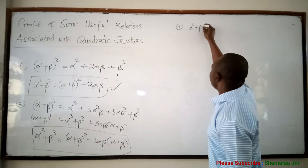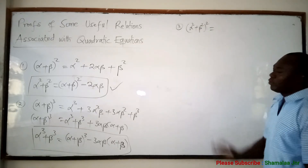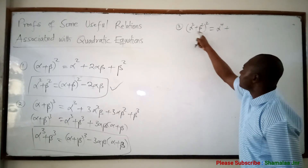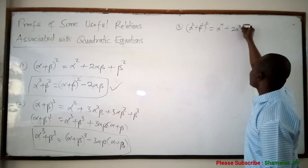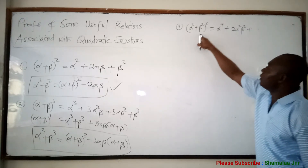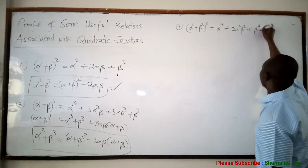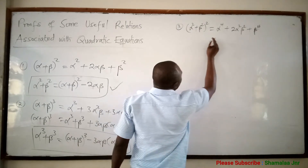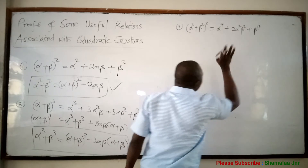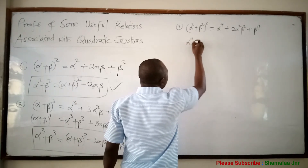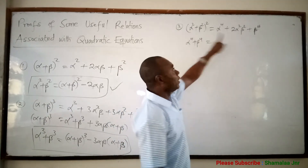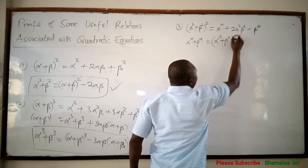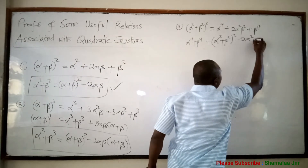Number three: alpha squared plus beta squared, all squared. Look on the board. When you are asked to expand this, you raise alpha squared to the power 2, that will be alpha raised to the power 4. Now, if you decide to make alpha raised to the power 4 plus beta raised to the power 4 the subject, it is going to be alpha raised to the power 4 plus beta raised to the power 4 equals alpha squared plus beta squared, all squared, minus 2 alpha squared beta squared.